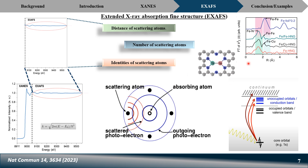EXAFS spectra give information about: the distance between the absorbing atom and nearby atoms, the number of scattering atoms present in the neighborhood, and the identity of those atoms — whether nitrogen, sulfur, or whatever is present. In published papers, you will find EXAFS plots whose x-axis may differ, but you can convert between them using the appropriate equation, and this is how we interpret coordination environment from EXAFS.